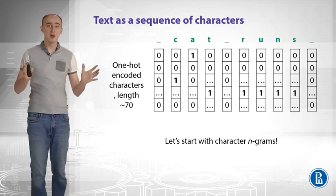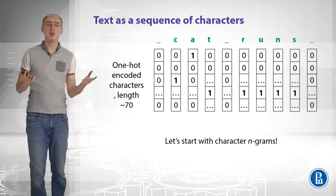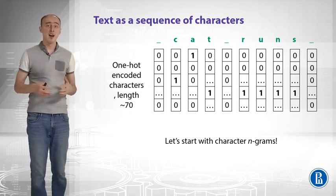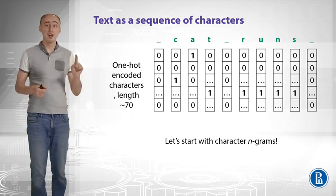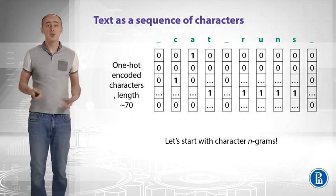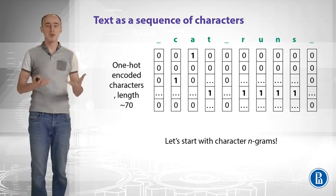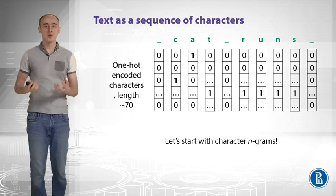Our alphabet is not that huge and our special characters are not that numerous either. So, this one-hot encoded vector will be sparse, but it will not be that long. Okay, so what do we do next? We have some numbers now, and it looks like a sequence of those numbers.